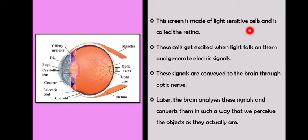These cells in the retina get excited when light falls on them and generate electric signals. These signals are conveyed to the brain through the optic nerve. The brain analyzes these signals and converts them so that we perceive the objects as they actually are.